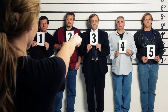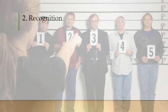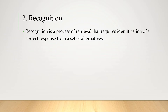The second type of memory retrieval is recognition. Here's an example: a witness has been asked to look at a row of suspects and identify which one they think is the perpetrator. Is this a form of recall? Well, she's not actually retrieving information using minimal cues, because the correct answer is right there — she just needs to identify which one. So according to our definition, this is no longer recall. It's recognition — the process of retrieval that requires identification of a correct response from a set of alternatives. You might be wondering: what's the difference between recognition and cued recall?